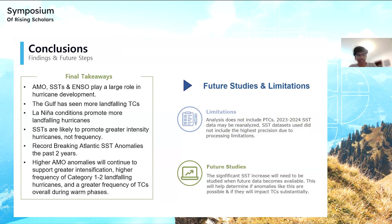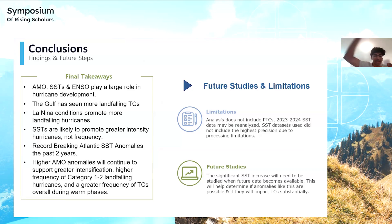On the left are the final takeaways. Highlighting the last bullet point: higher AMO anomalies will definitely continue to support greater intensification and higher frequency of Category 1 to 2 landfalling hurricanes. However, it didn't have much impact on Category 3-plus hurricanes. It will also lead to a greater frequency of tropical cyclones during warm phase years.